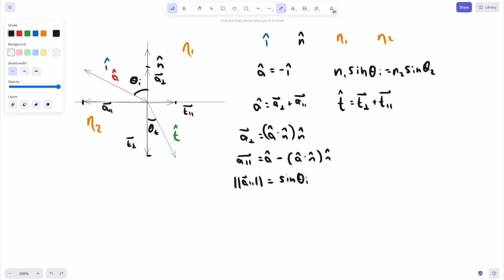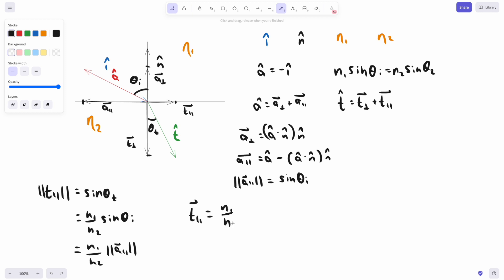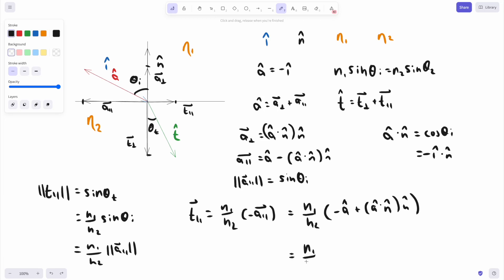Okay, so now let's look at T. Assuming T is of unit length, the length of T par is sine theta t, whatever theta t is. And here's the heart of the whole thing. We can use Snell's law. By Snell's law, sine theta t is just N1 over N2 times sine theta i, which we can write as N1 over N2 times the magnitude of A par. As for the actual vector, T par is in the opposite direction of A par. So T par is N1 over N2 times negative A par. We can substitute as follows. Note that A dot n is cosine theta i, the same as negative i dot n. Substituting negative i for A, we get T par.